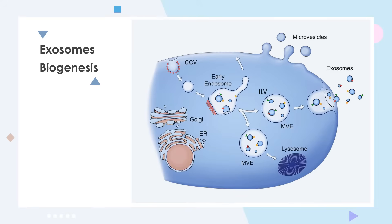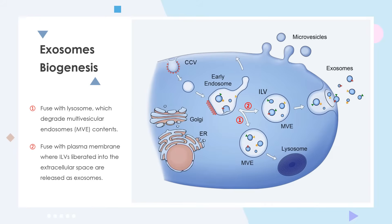MVB is characterized by the invagination of the inner body membrane to form the intraluminal vesicles, or ILV. During the formation of ILV, cytoplasmic inclusions, transmembrane, and peripheral proteins are integrated into them. The ILV accumulated in the MVB lumen has two different destinies: fusion with the lysosome, which causes the contents to degrade, or fusion with the cytoplasmic membrane, which releases the vesicles to the extracellular space by exocytosis — that is the exosomes.